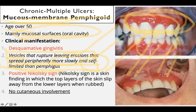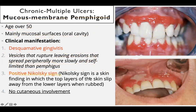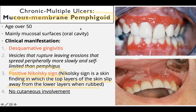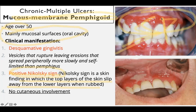There is a positive Nikolski sign. Nikolski sign is a skin finding in which the top layers of the skin slip away from the lower layers when rubbed — the top layers separate from the lower layers. This is found in mucous membrane pemphigoid. Its oral manifestation occurs usually over age 50, causes desquamative gingivitis, slow peripheral extension, and positive Nikolski sign.